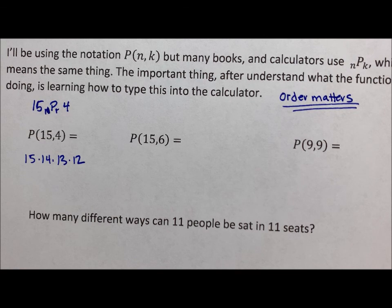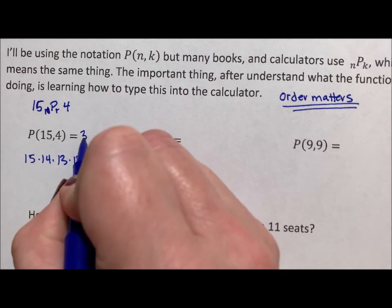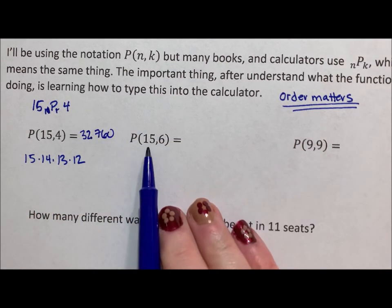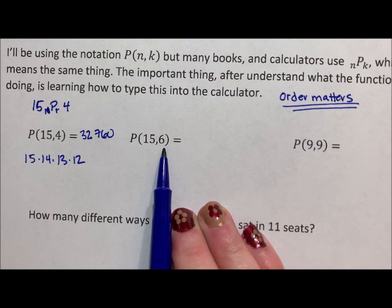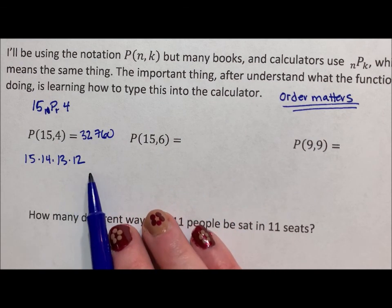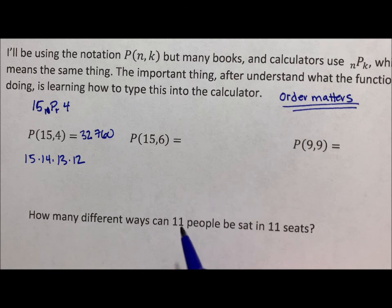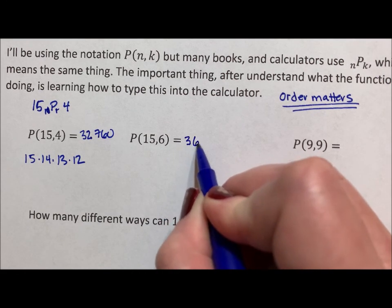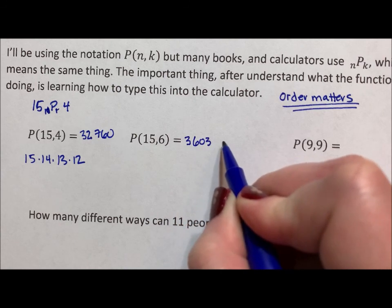So the permutation of 15, 4, is 32,760. Now 15, 6. So we take two more numbers. So add on the 10 and the 9 brings us up to a much bigger number. 3,603,600.